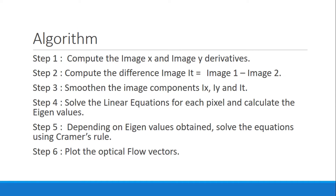Here I'll go over the algorithm steps for computing optical flow using the Lucas-Kanade method. The steps are: first, find the image X and Y derivatives; second, find the image difference between two consecutive frames; third, smooth the Ix, Iy, and difference image components; then solve linear equations for each pixel, calculate the eigenvalues, and solve them using Kramer's rule; finally, plot the optical flow vectors obtained. This will be clearer in the MATLAB demonstration.